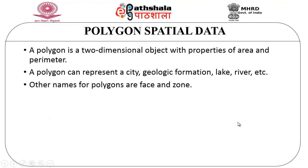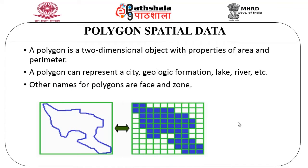The next kind of spatial data is polygon spatial data. A polygon is called a two-dimensional object with the properties of area and perimeter associated with it. A polygon can be used to represent a city, geologic formations, lakes, rivers, etc. The other names given for polygons are faces and zone. Here we can see a polygon defined by a closed set of edges, and similarly the same polygon is represented in the form of a matrix or grid.